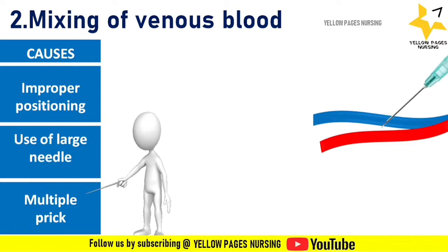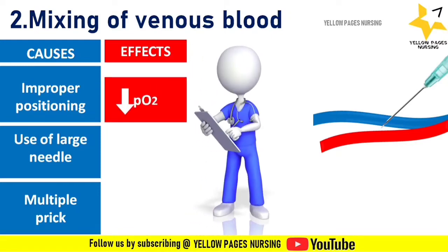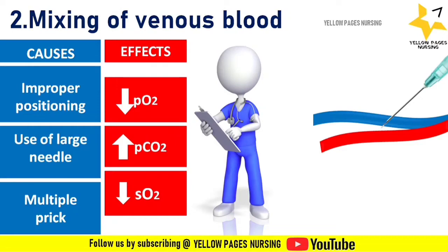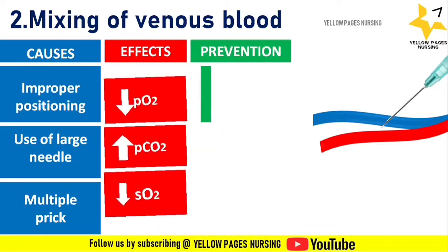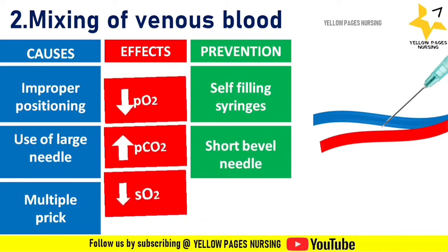Use of large needles and multiple pricks also create chances of mixing venous blood with arterial blood. The effects include decrease in partial pressure of oxygen, increase in partial pressure of carbon dioxide, and decrease in saturation. To prevent this, use self-filling ABG syringes which fill automatically only when they hit an artery. Also use short bevel needles, positioned at an angle of 45 degrees to collect the sample.